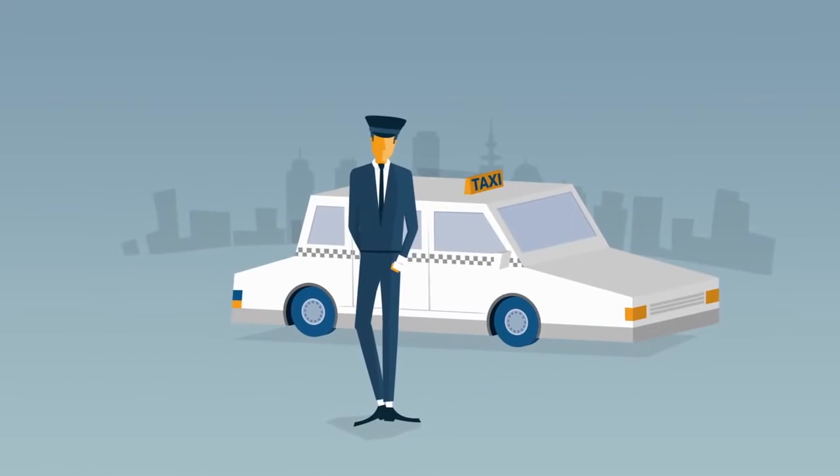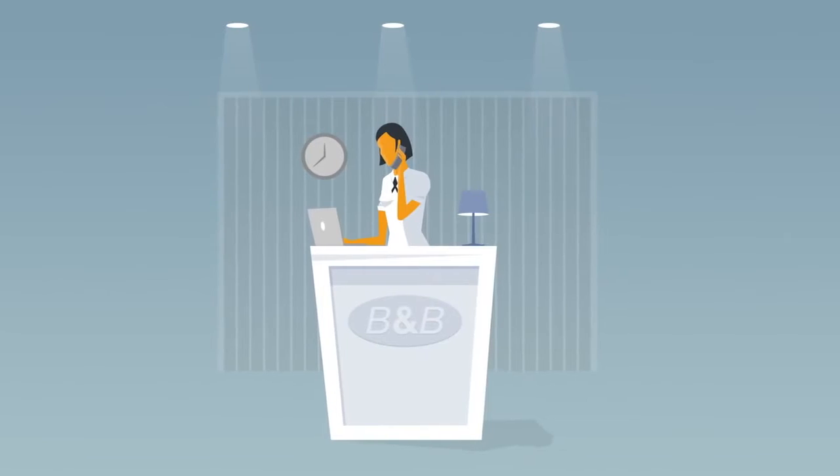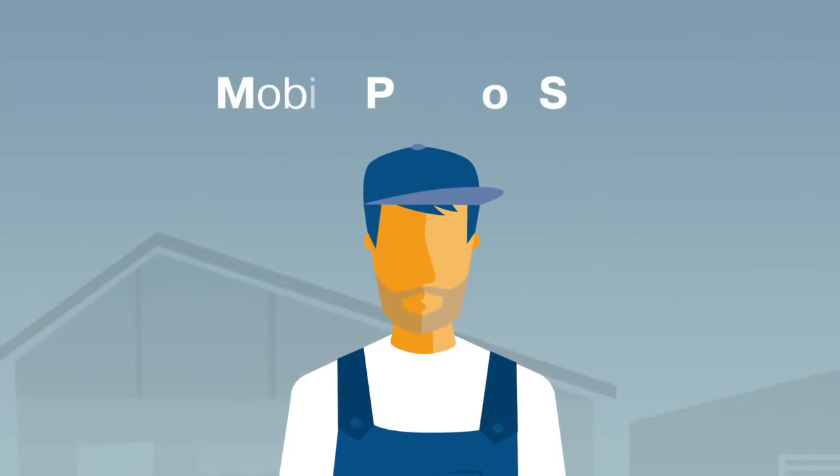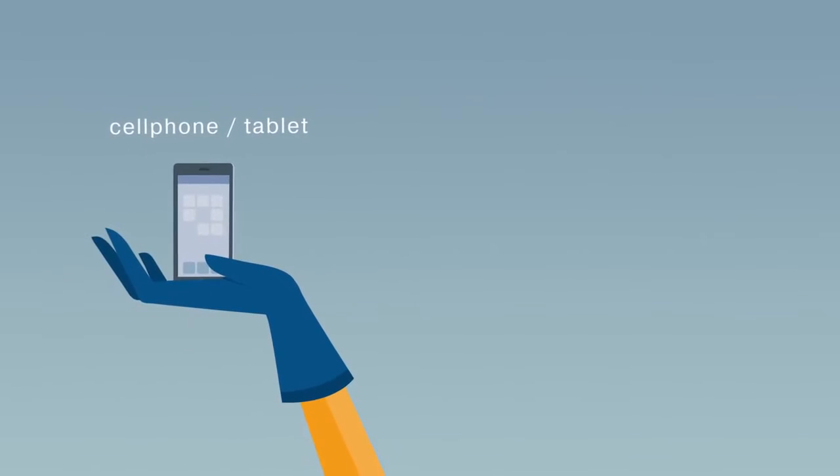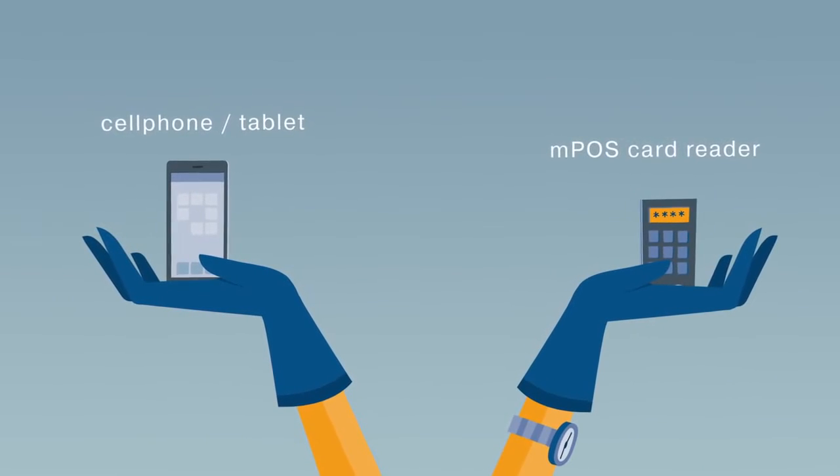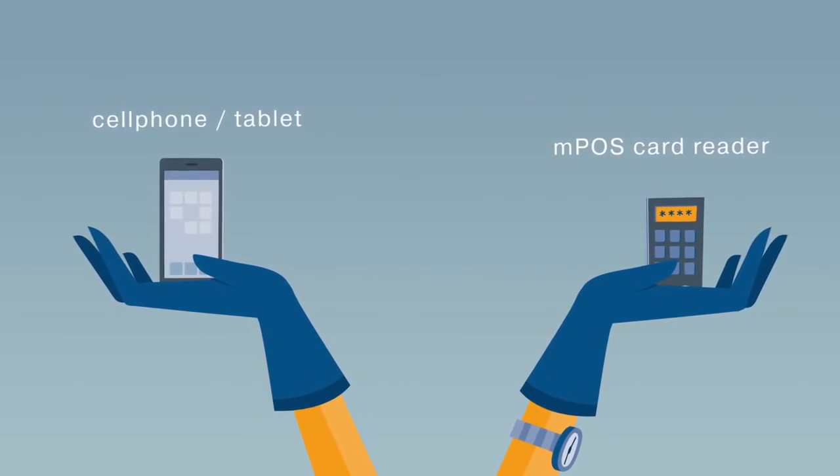What do a taxi, a plumber, a restaurant and a BNB have in common? They all use MPoS, Mobile Point of Sale, a device that uses your cell phone or tablet to accept credit and debit card payments without the need for a landline.